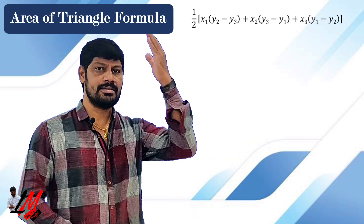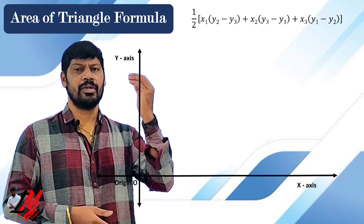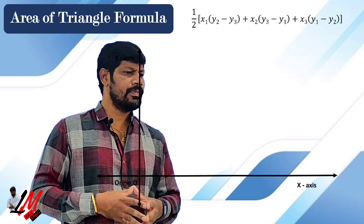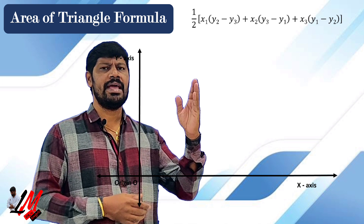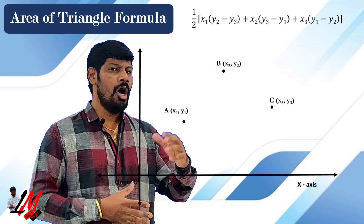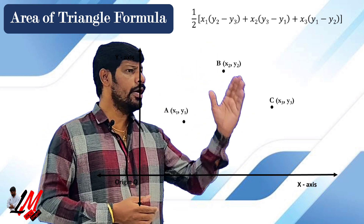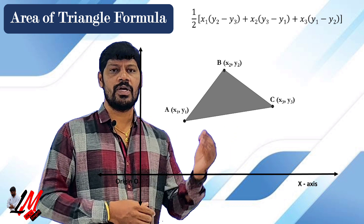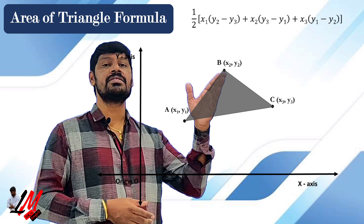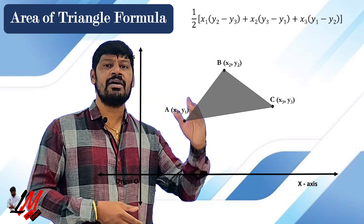Take the x-axis and y-axis with the origin. Now let me take directly three points A(x1, y1), B(x2, y2) and C(x3, y3) as the three points on the plane. On joining all three points we are going to get a triangle.